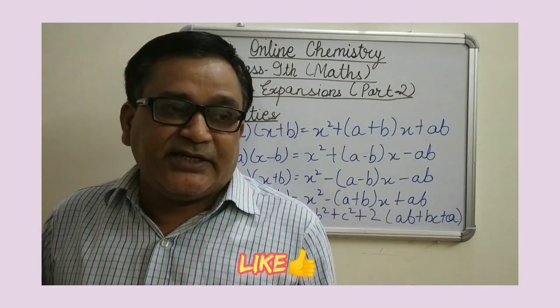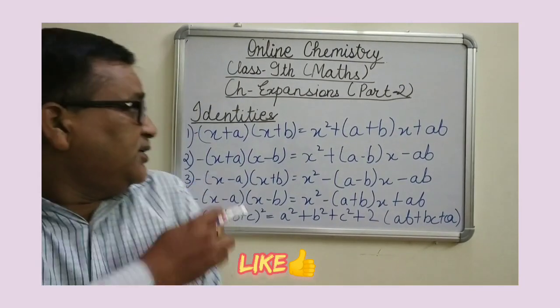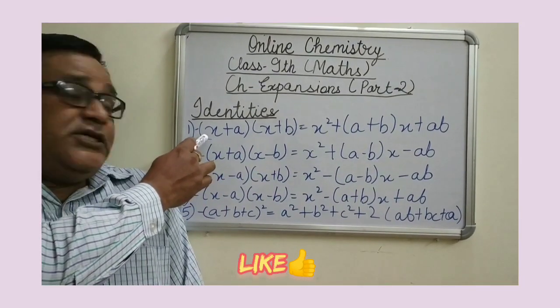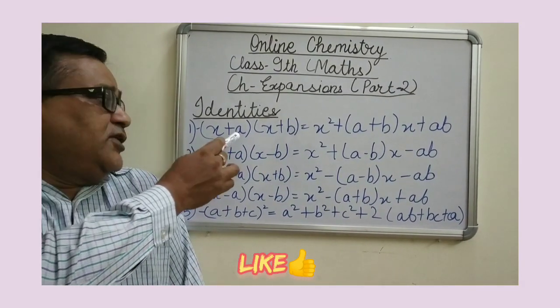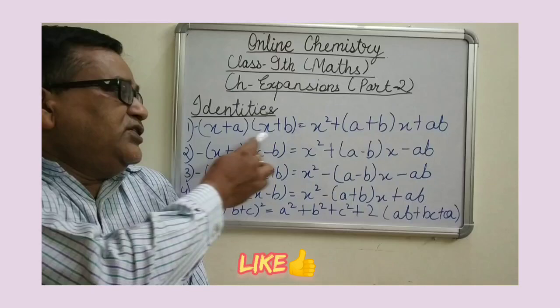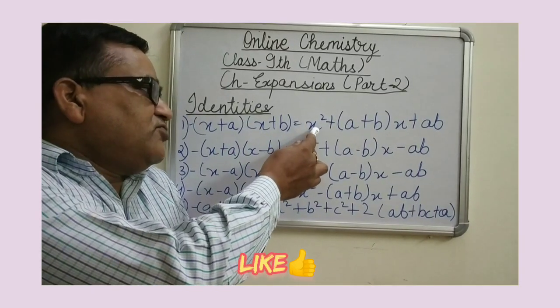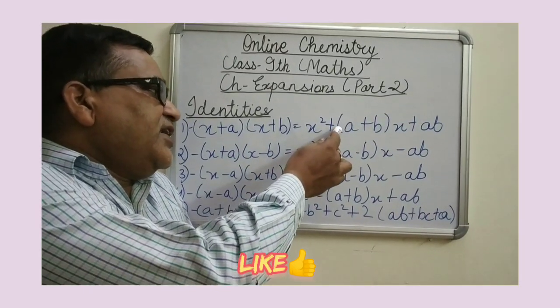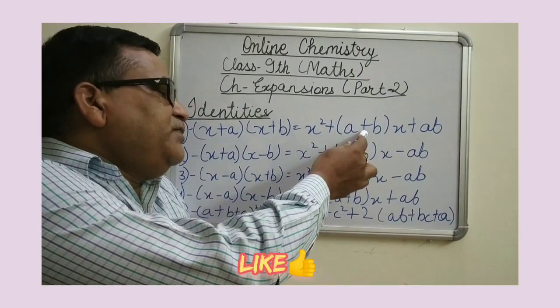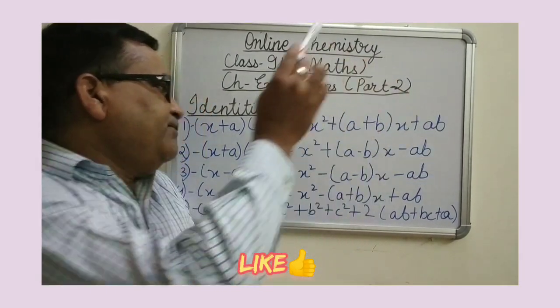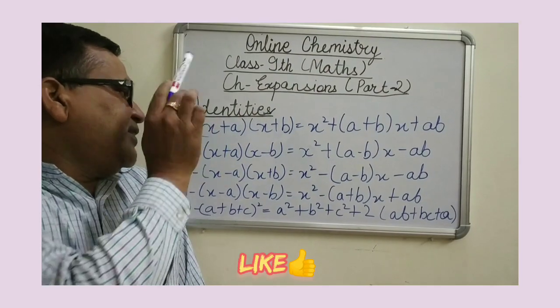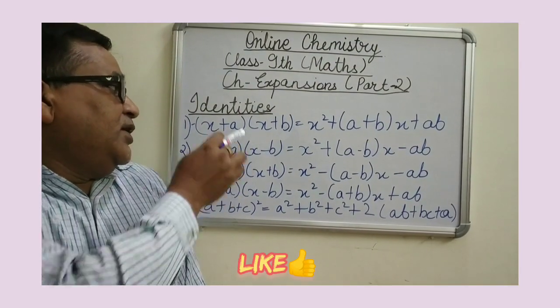The next identity is: x plus a into x plus b is equal to x squared plus bracket a plus b into x plus ab. This is the next identity.